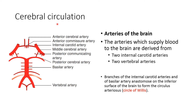In cerebral circulation, the arterial supply to the cerebrum comes from two arteries: the internal carotid artery and the vertebral artery. The two vertebral arteries together form the basilar artery. The basilar artery and the two internal carotid arteries together form the Circle of Willis, which provides blood supply to the majority of the brain.